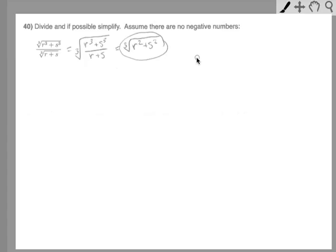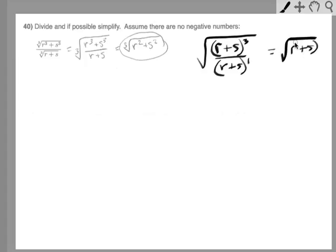In other words, if we had this situation, if we had on top r plus s quantity cubed over a quantity r plus s, then you could think of this as two exponents and two bases, and the bases are the same, and you're dividing, and you could subtract the exponents. Or if you want to think of it in terms of canceling, you could cancel the quantity r plus s, and you'd end up with r plus s quantity squared.